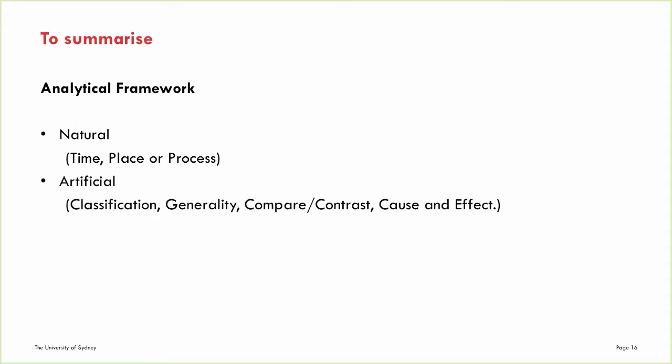To summarize, you need to structure the information using a particular type of schema or a combination of schemas. There are two types: natural, such as time, place, or process, and artificial, like classification, compare/contrast, or cause and effect. Using natural frameworks exclusively may make your writing more descriptive than analytical. That is, if you merely list research in chronological order without any attempt at drawing a classification, establishing causation, or making comparisons, you will have done little to demonstrate you can grasp the big concepts in your field.